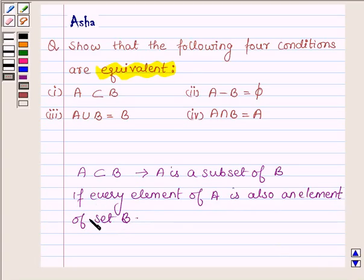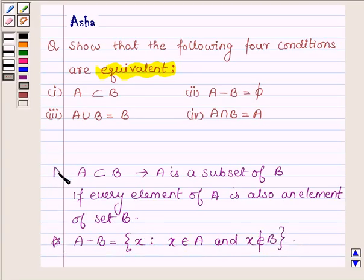And A minus B is a set having all those x such that x belong to A and x do not belong to B. So with the help of these two definitions we will show that the four conditions are equivalent.